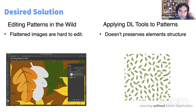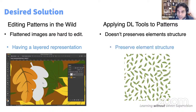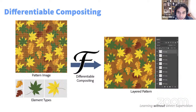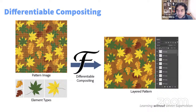To summarize, we have two problems: how to do editing in the wild, and how to preserve the original structure of patterns. We solve the first with a layered representation that also preserves element structure. We want these patterns along with element types as input, and output a layered representation. Challenges include: unknown number of elements, unknown layering order — which is a discrete and non-differentiable choice — and the raster nature of the data.